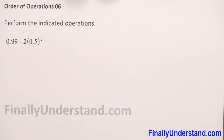We have decimal numbers here, and the order of operations for decimal numbers is the same as for whole numbers and fractions. So first we have to do parentheses, then exponents, then multiplication and division, and finally addition and subtraction.